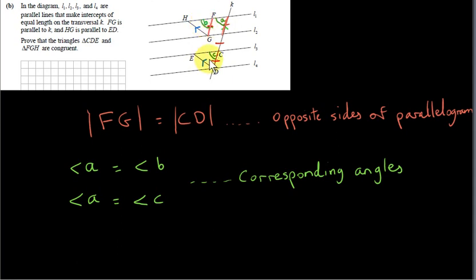Now let's look at some angles in these two triangles. I'm using small letters to represent angles — normally capital letters are used, but those have been used here to represent points. Angle A equals angle B. Why? We're given that these two lines are parallel, and L1 is cutting across these two parallel lines, so we have corresponding angles formed. So A and B are corresponding angles, which means they're equal.